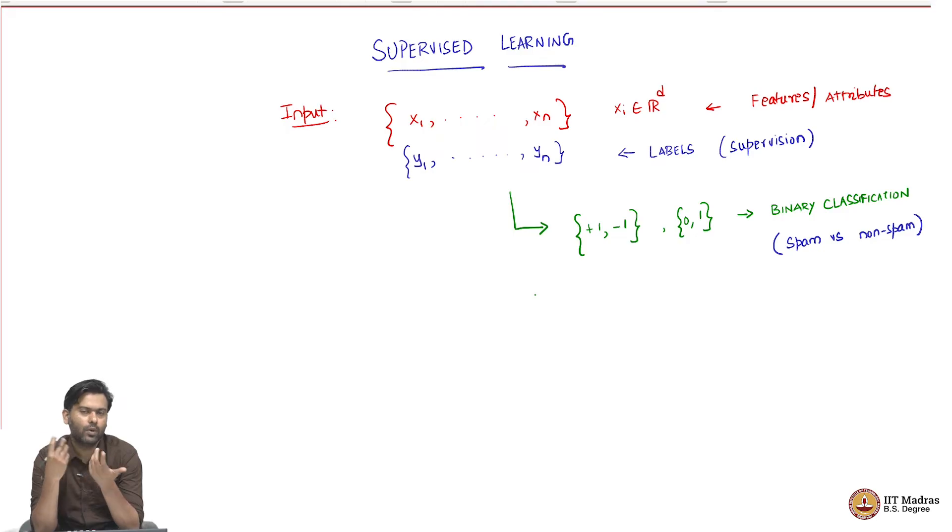And now given a new email, a spam classifier would like to say if the email is spam email or non-spam email automatically. And so, this is a binary classification problem.